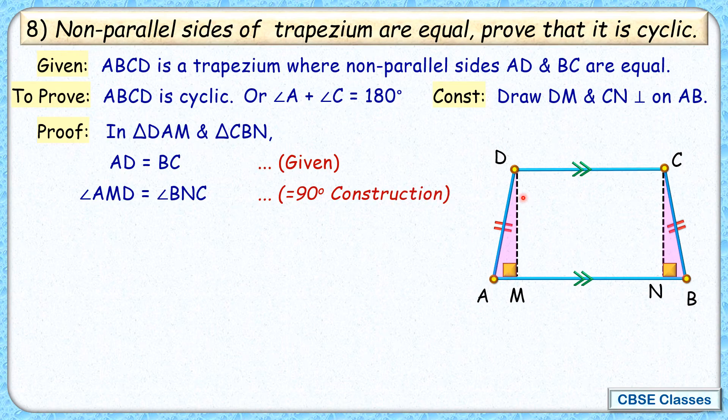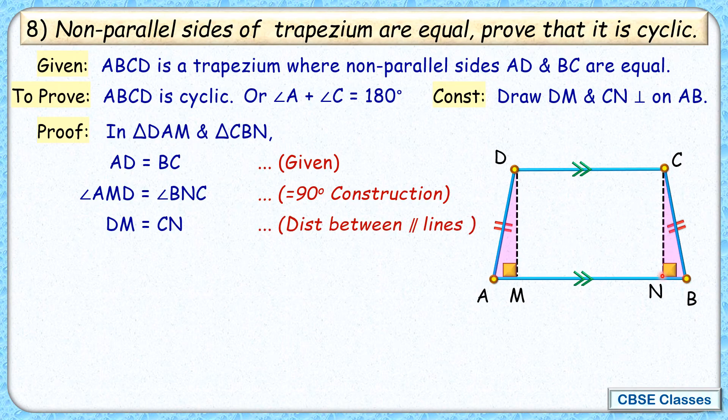And third is your side DM and CN. They are equal. Why are they equal? Because CD and AB are parallel lines, and we know that distance between parallel lines is the same throughout.